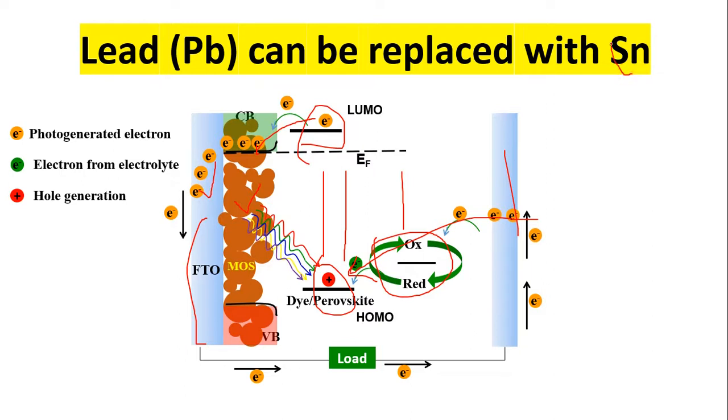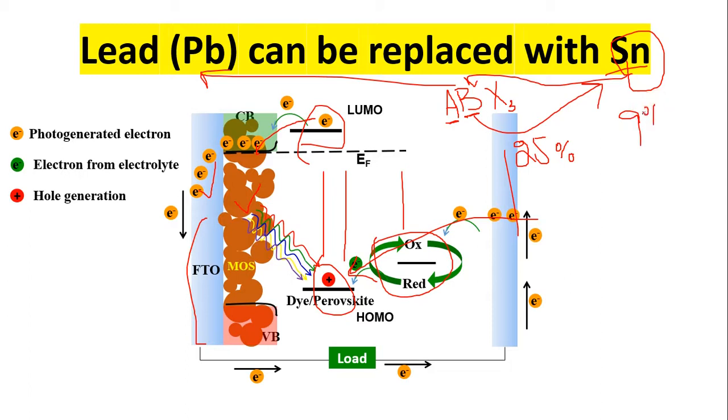Now look here. Lead can be replaced with tin, Sn, because these two are the same group materials with the same property. So people already done a lot of work, but the efficiency - if you are using A for methylammonium, B for lead, and X3 for halogen - CH3NH3PbI3, this is the lead. So you have to replace this with Sn. But keep in mind that when using lead, the efficiency is almost now 25 percent. But when we use tin oxide, the efficiency is only, according to my knowledge, only 9 percent.